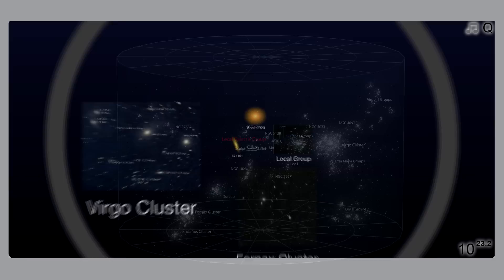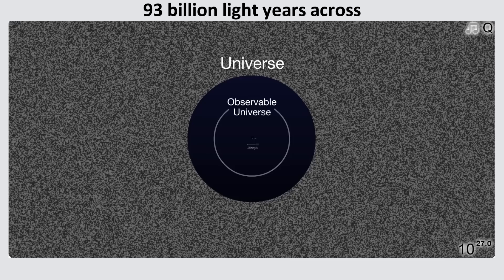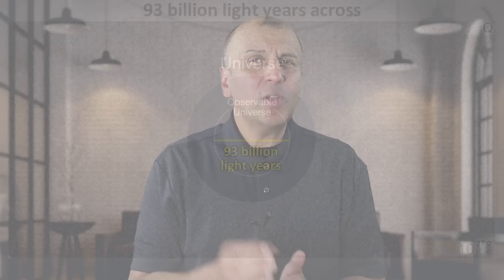When we go a thousand times larger than this, we reach the end of the visible universe, at about the scale of 10 to the 27 meters. The observable universe has a diameter of about 93 billion light years, almost exactly 10 to the 27 meters. How is it that the universe is only 13.8 billion years old, but it's 93 billion light years across?